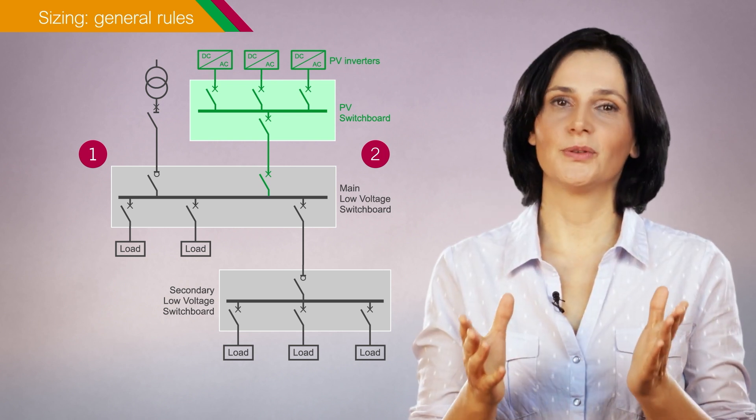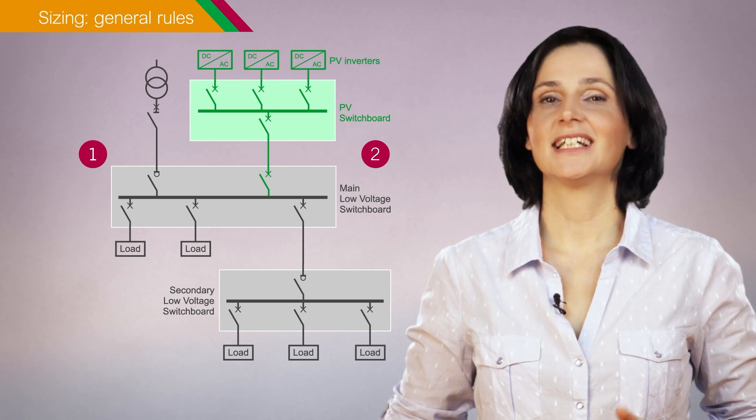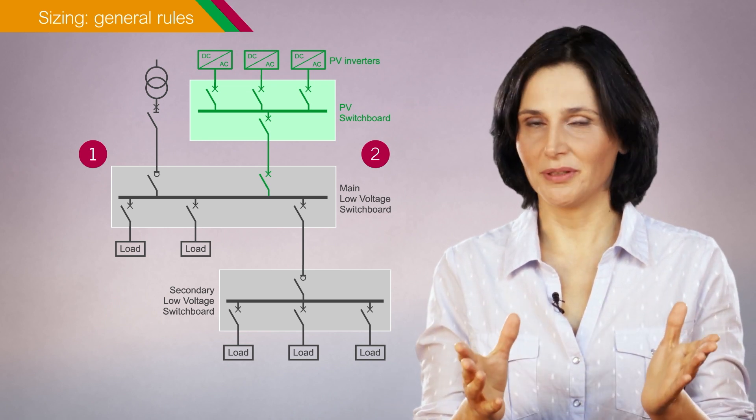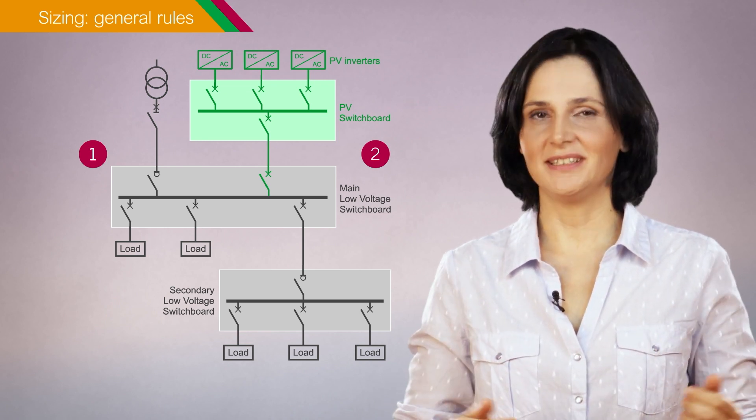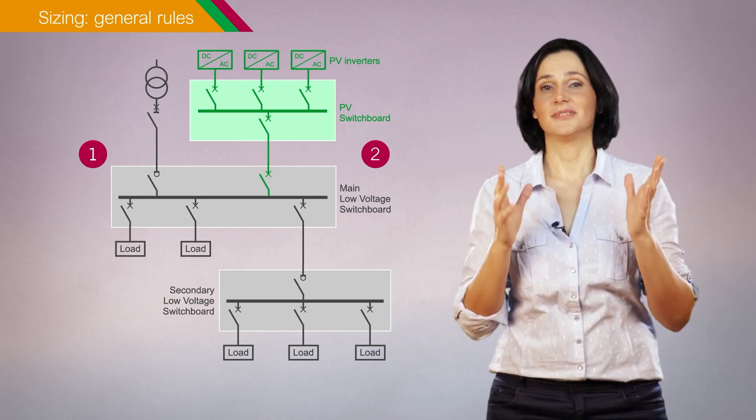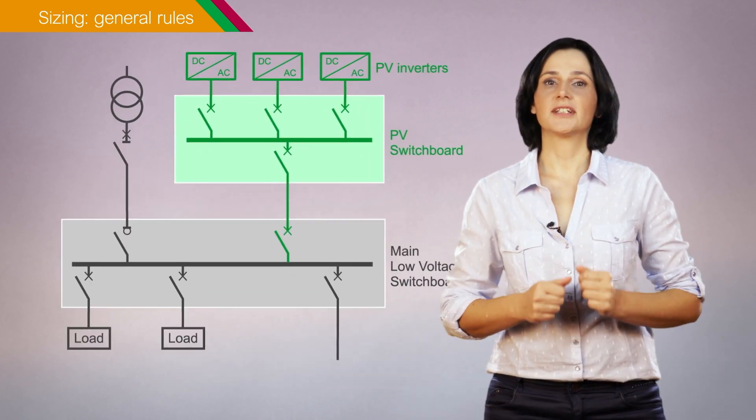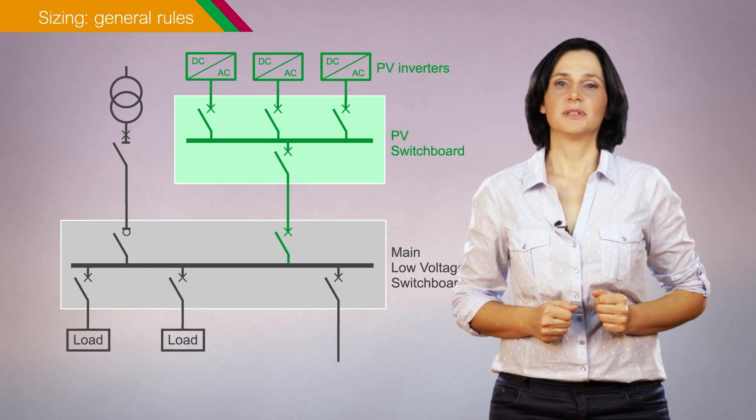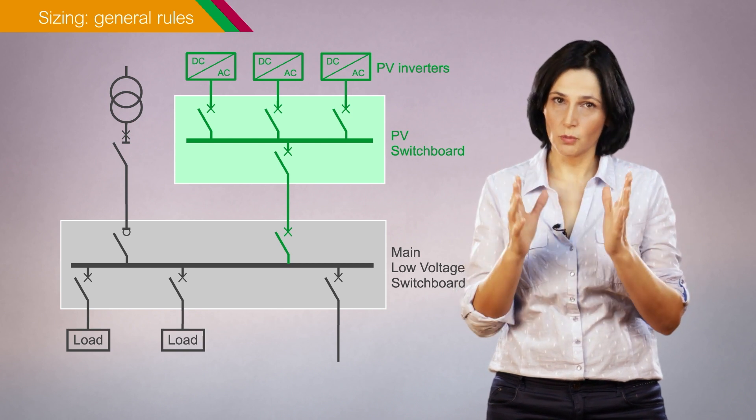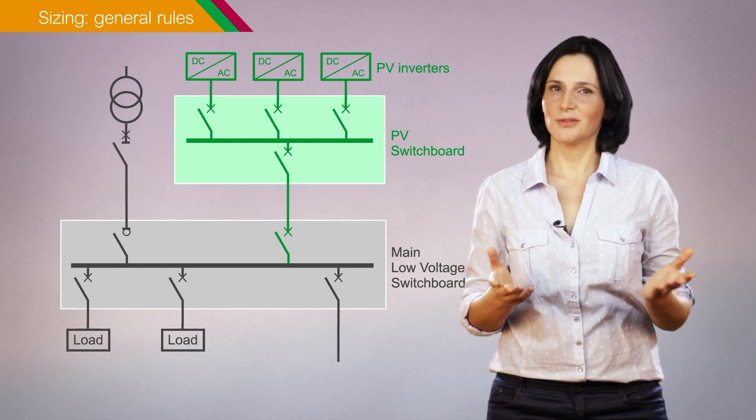Power flow, nominal currents, and short-circuit currents must be calculated for each operating mode, as I explained in another video. The sizing of all electrical installation equipment must be done taking into account all operating modes and the worst-case constraints.